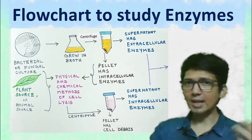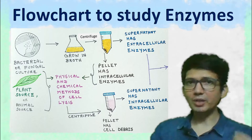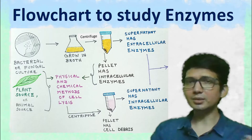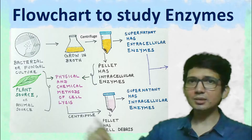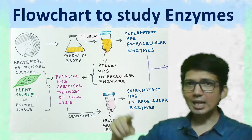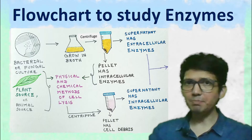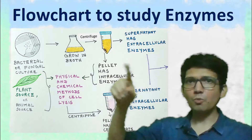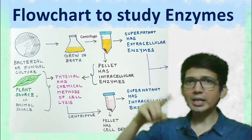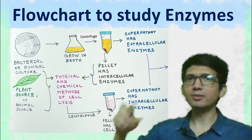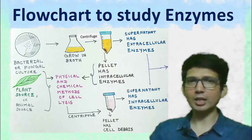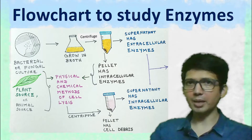Once the cells are lysed, we centrifuge the sample. As a result, the cell debris will be obtained in the pellet, whereas the supernatant will have the intracellular enzyme.